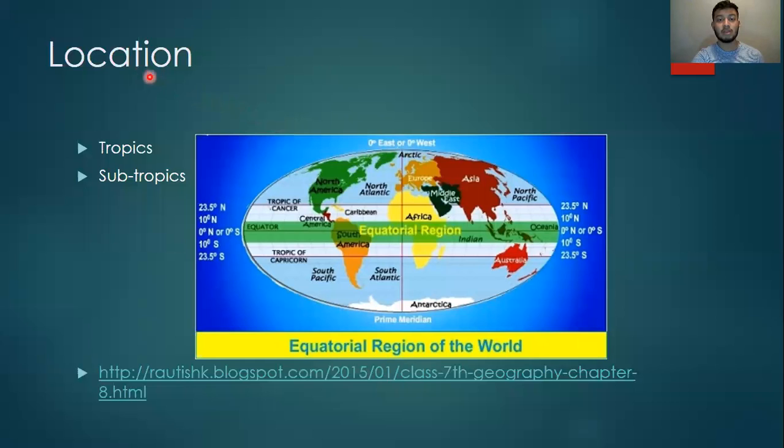As far as location goes, the Catharanthus roseus is native to Madagascar but has emigrated to different parts of the world but mainly thrives in the tropics and subtropics. As we can see the tropics, these are these here, and the subtropics which are right above and right below these red lines are really near the equator.